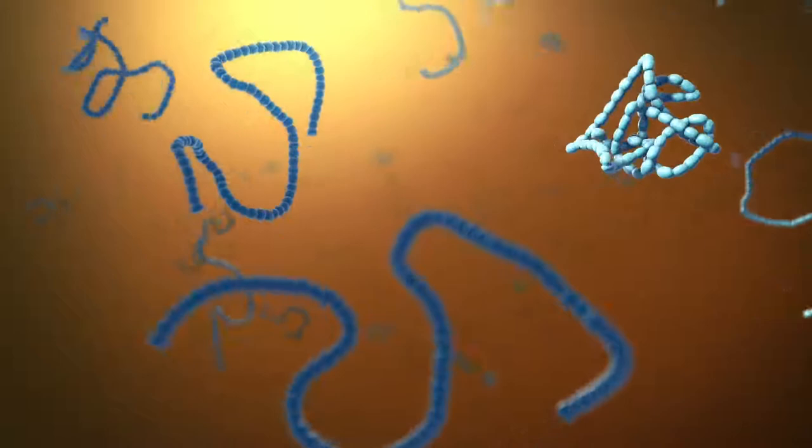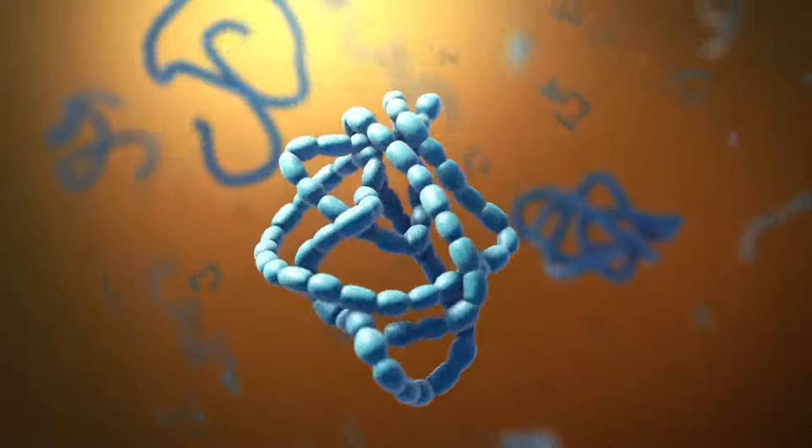As proteins move through the Golgi body, they're customized into forms that the cell can use. The Golgi body does this by folding the proteins into usable shapes or adding other materials onto them, such as lipids or carbohydrates.